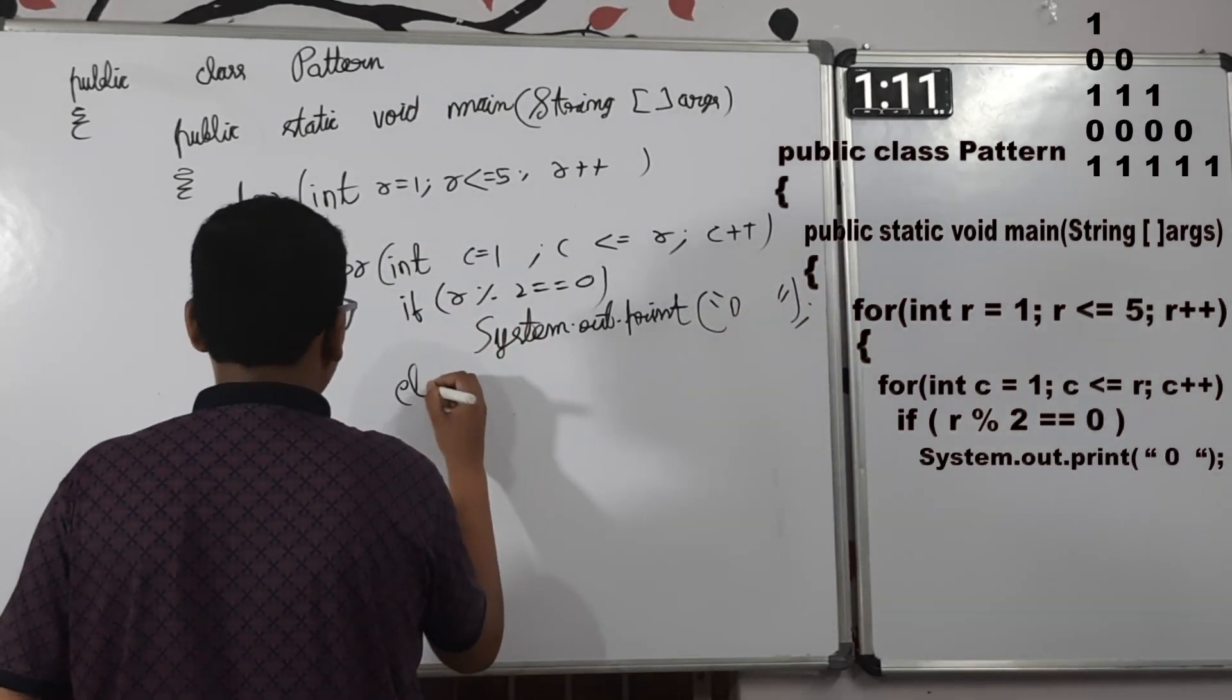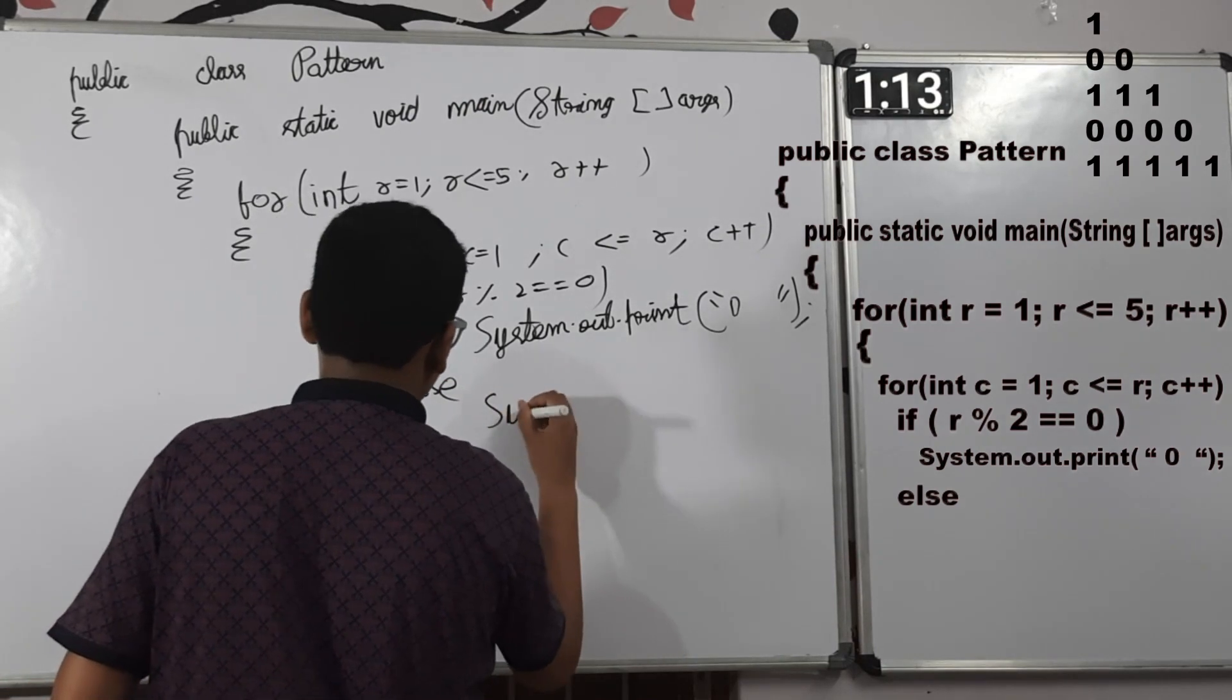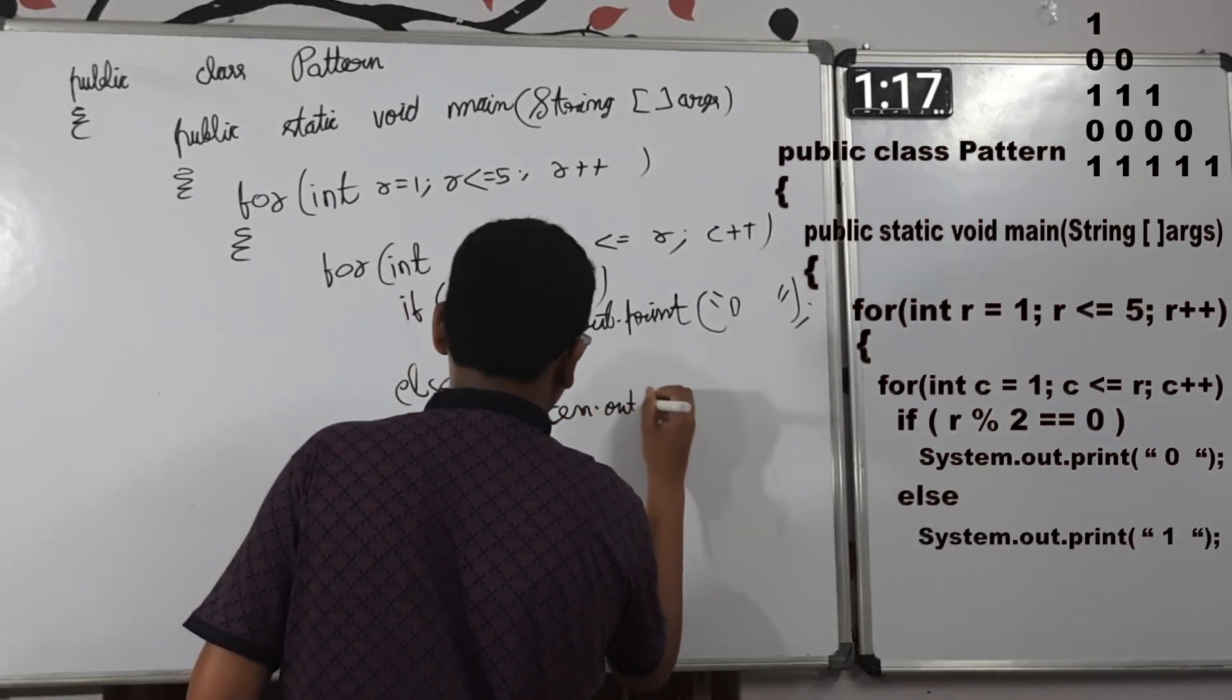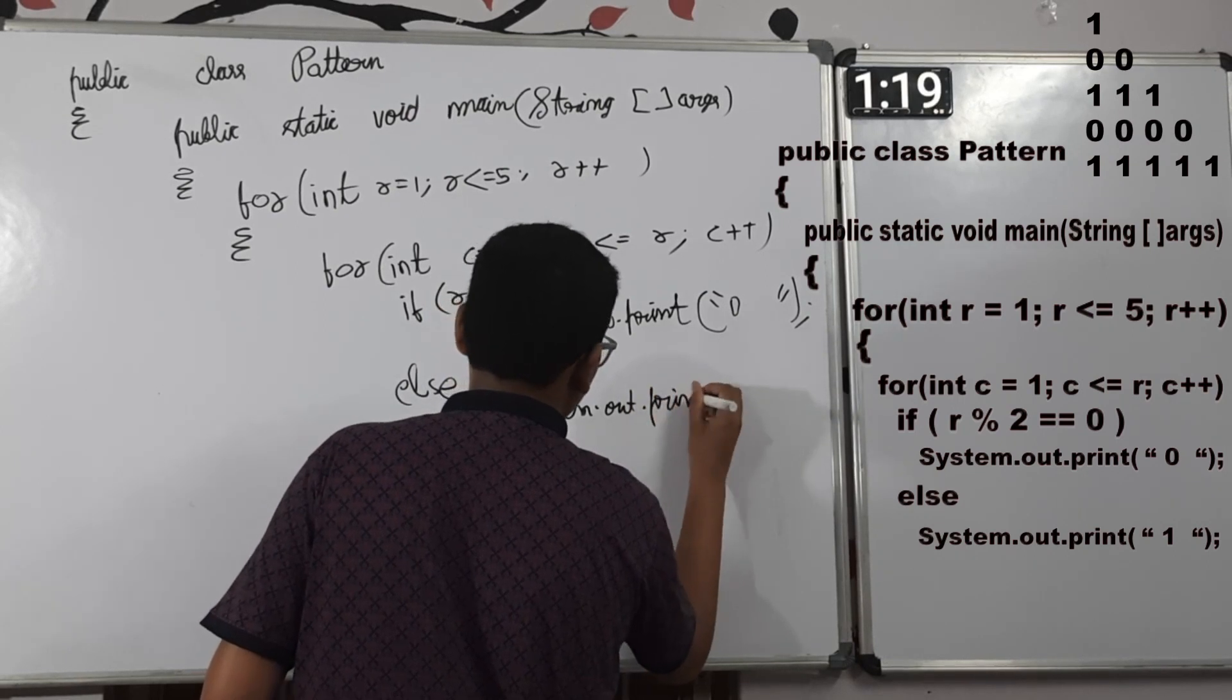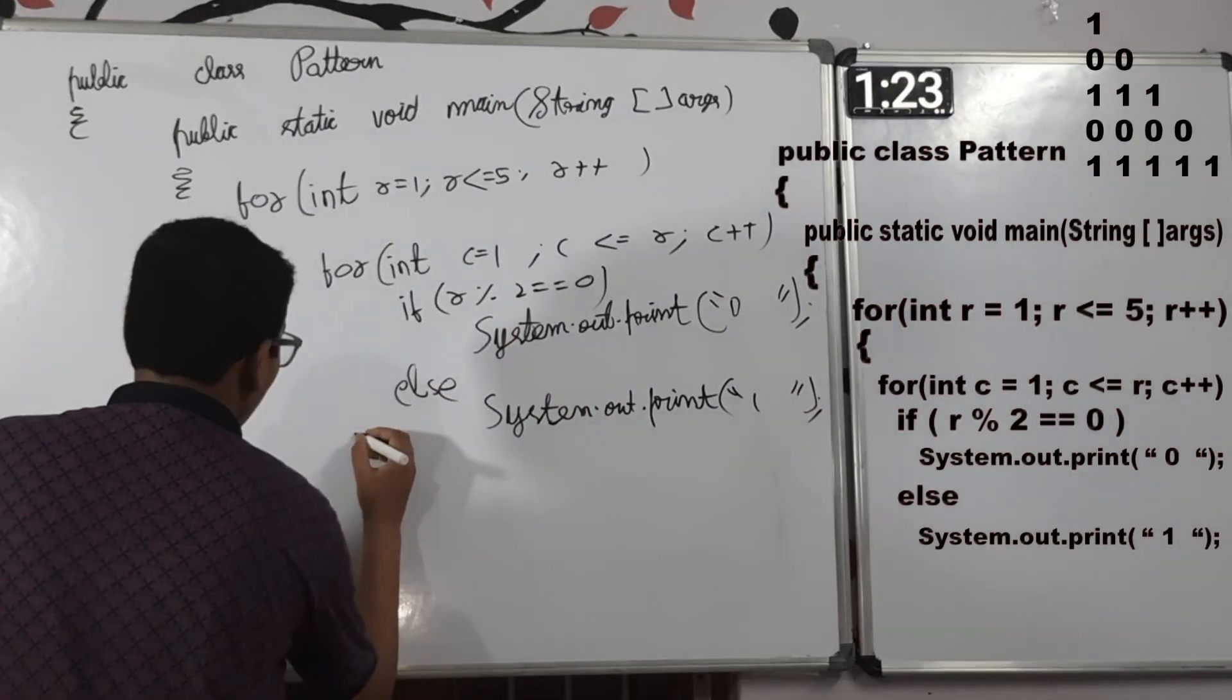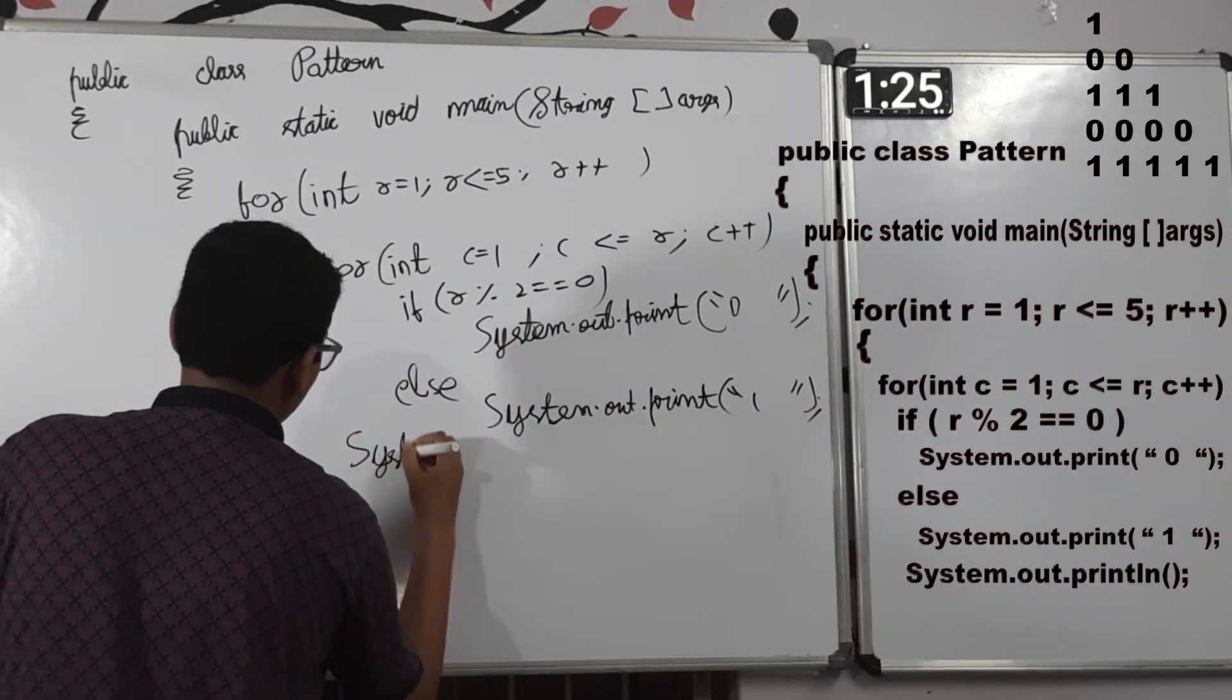Now, if row value is odd, then we will display 1 with some space. Now, system dot out dot println to take the control to the next line.